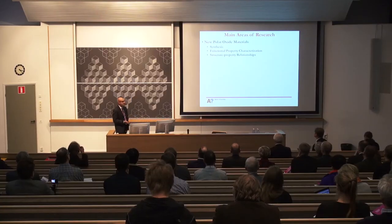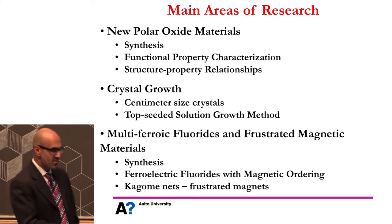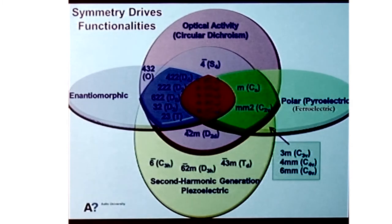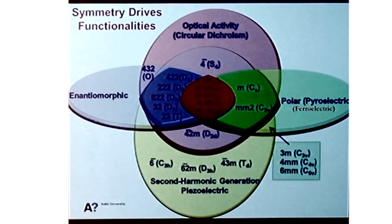We have three main areas of research and I'm going to be talking mainly about the first two: new polar oxide materials and crystal growth. We also have an area of multiferroic chlorides which I won't have time to discuss. This Venn diagram is something that I came up with when I was in graduate school back in the 90s. The information is actually known in textbooks, but I put it together as an easier way of looking at the interrelationships between various crystal classes, and I put some compounds on here to help understand this diagram.